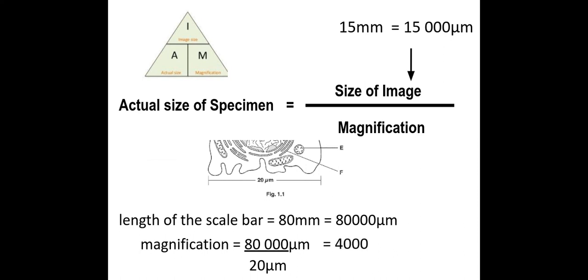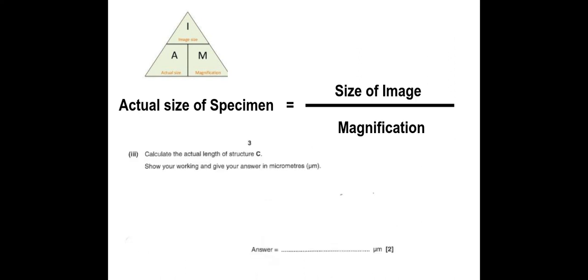And then I can plug that 4,000 magnification straight into my formula there to give me 15,000 micrometers. So the 15,000 that was taken from my actual image size using a ruler measuring in millimeters and then converting to micrometers.